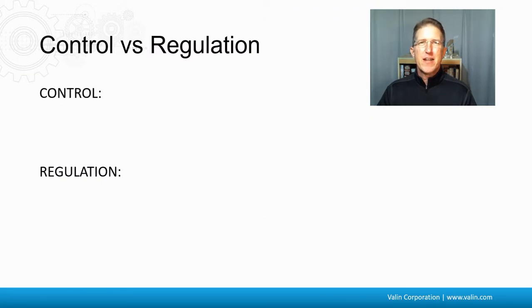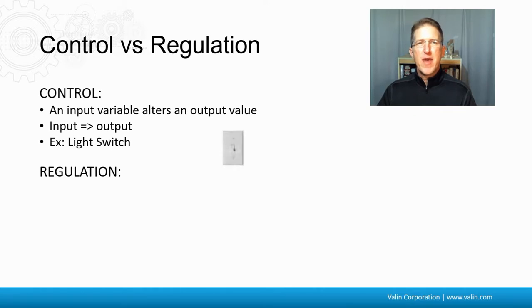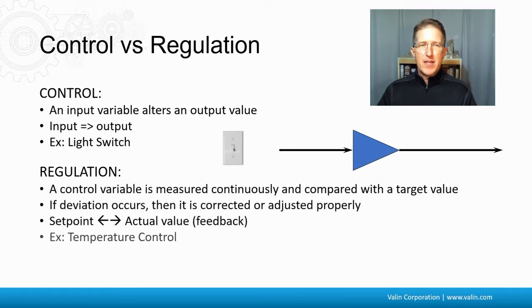First off, let's define control versus regulation. Control is an input that alters an output, like a light switch. You turn it on, the light goes on. And regulation is more about a control variable that is measured continuously and compared with the target value.